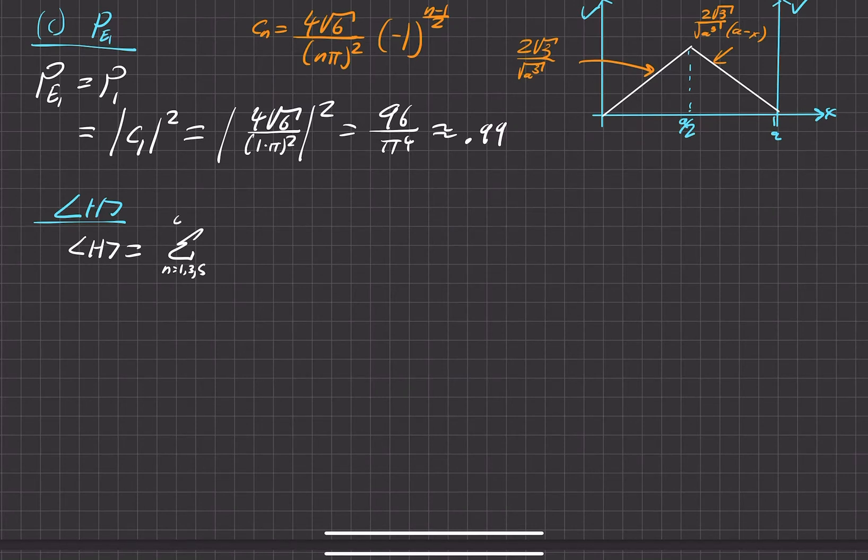So if we go ahead and do this to infinity, the way we weight them is just do the probability, which is just the coefficient squared, and then of the value that we're measuring. So e sub n, each probability has an associated energy state with it.